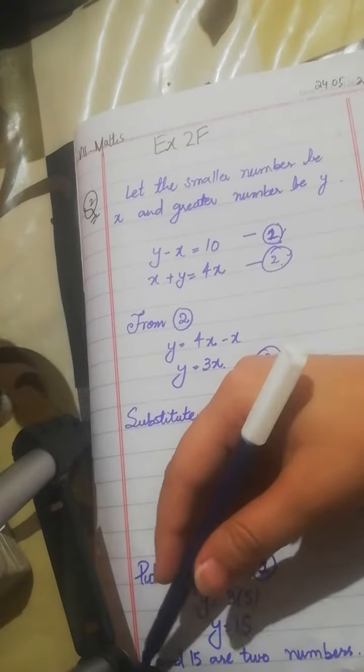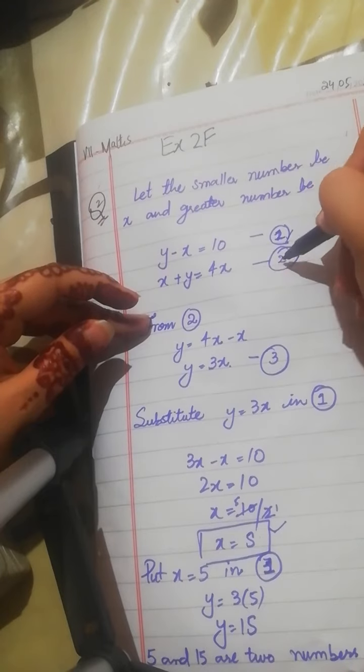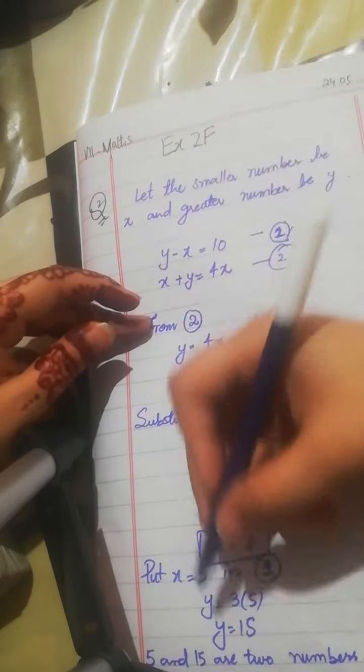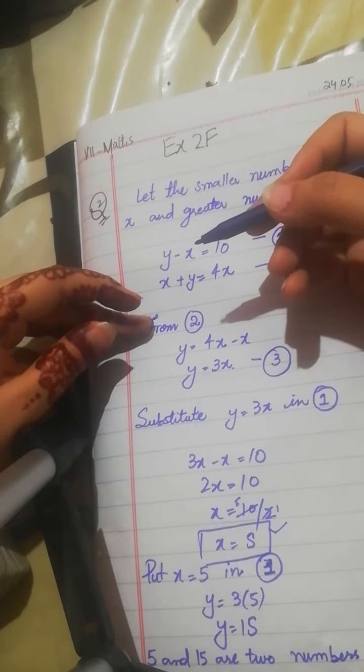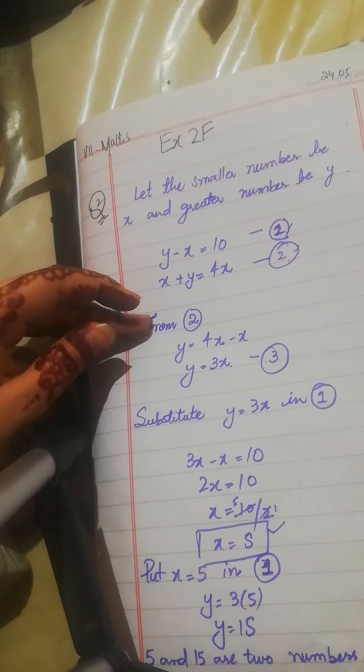If you put y minus x, that equals 15 minus 5 equals 10, which satisfies the equation. So 5 and 15 are two numbers. You have to practice this problem. Thank you.